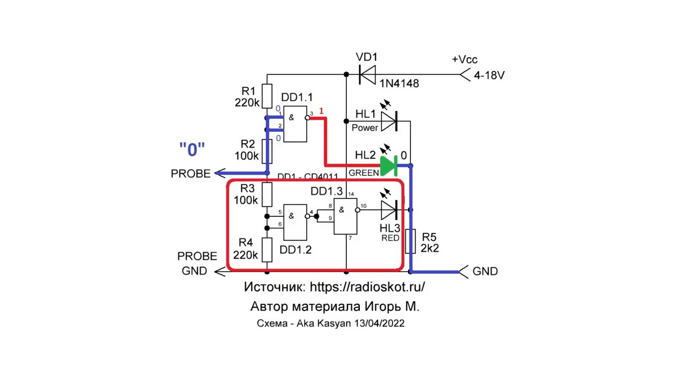At the bottom of the diagram, the following happens. The inputs of the first element are low, the output is high. This high level appears at the inputs of the second element. Therefore, its output will be low and the red LED will not glow.